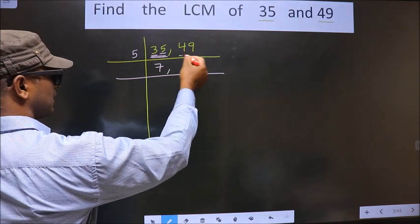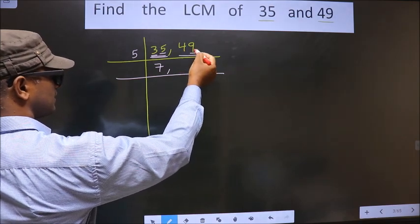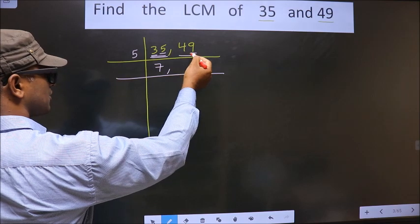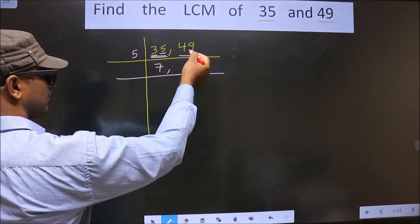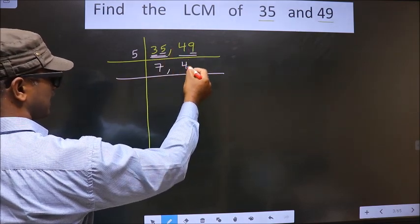Now, for the other number, the last digit is neither 0 nor 5, so this is not divisible by 5. So this number will come down as it is.